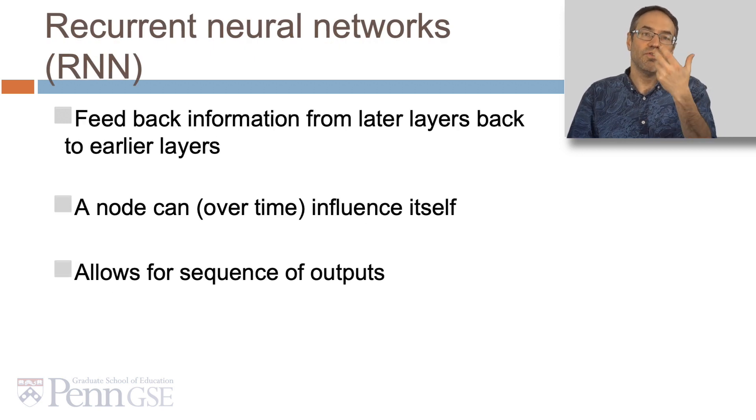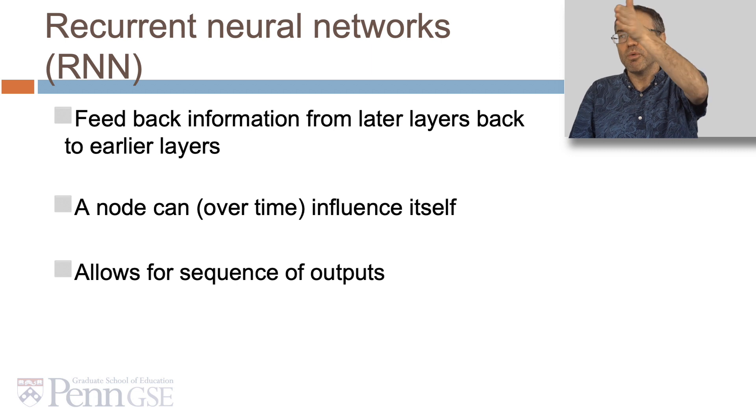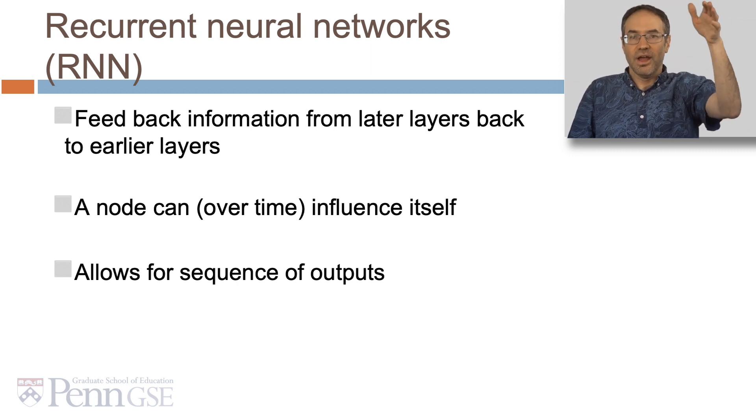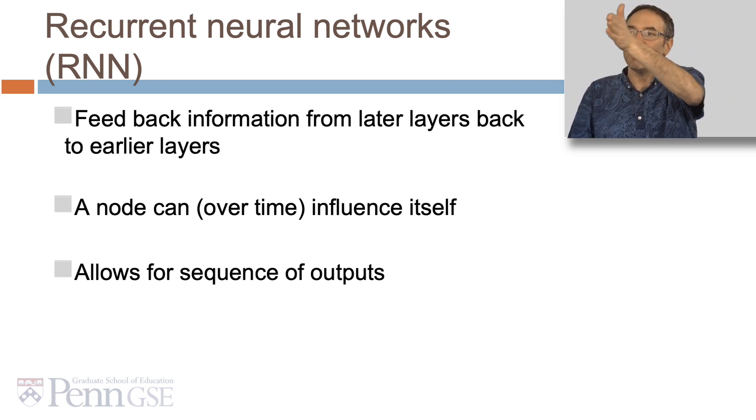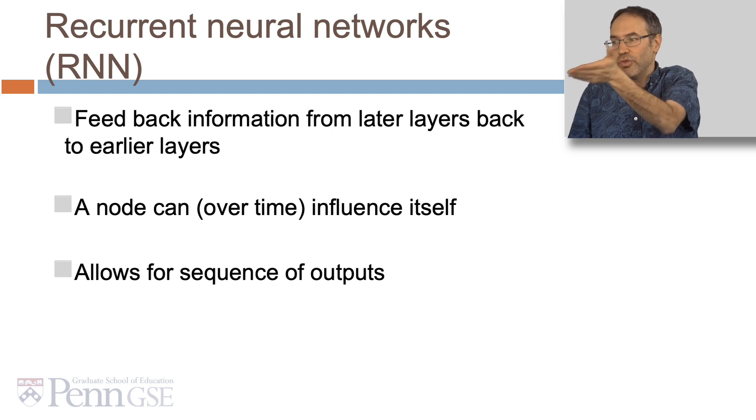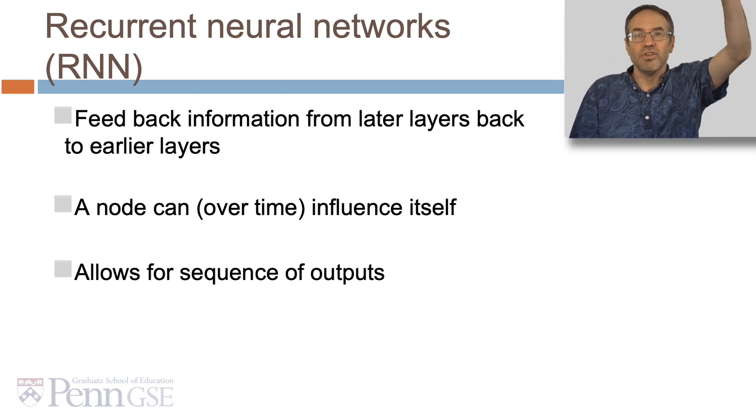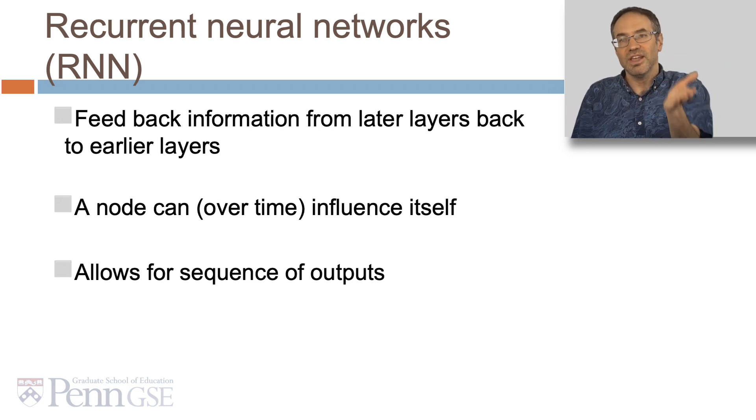Recurrent neural networks feed back information from later layers back to the earlier layers. We had that multi-layer neural network, and we're not just going to always go forward, we're also going to go back. A node can, in this way, over time influence itself. So information goes from 1 to 2 to 3, back to 1, and it's going to make it back to that node at level 3, and back again. This allows for a sequence of outputs, because every time you run the whole process forward, you get another set of outputs coming out at the end.